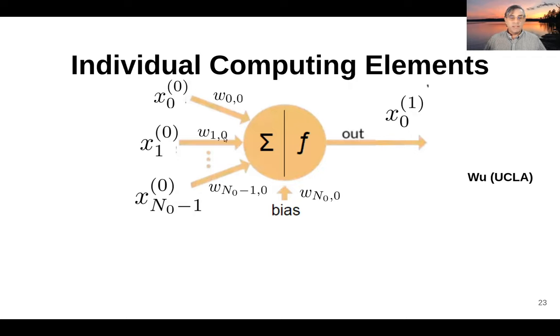This connection here comes from input one to unit zero, and on down the line. What I mean by this notation is that we're going to take the product of x_0 and w_{0,0}, and add that to the product of these two, and on down the line to the product of these two here.